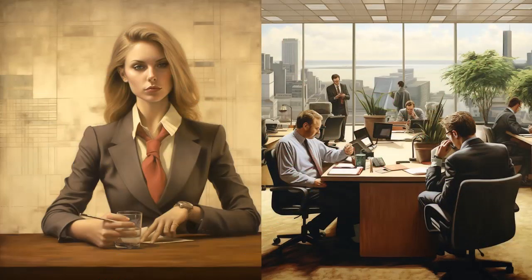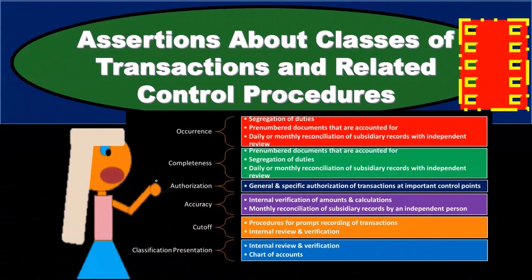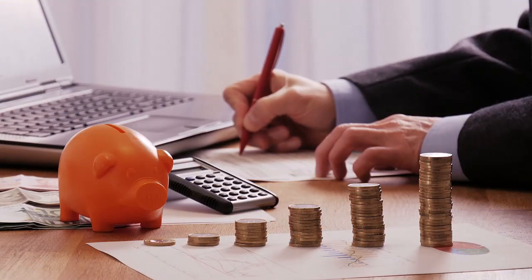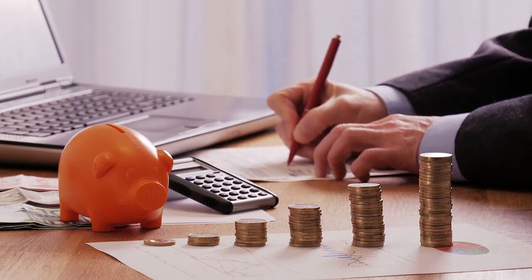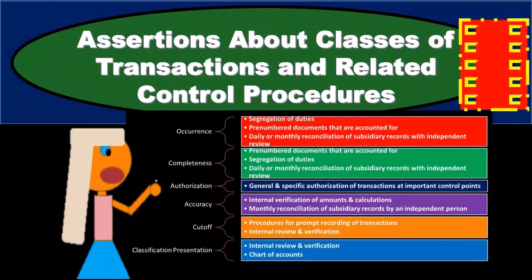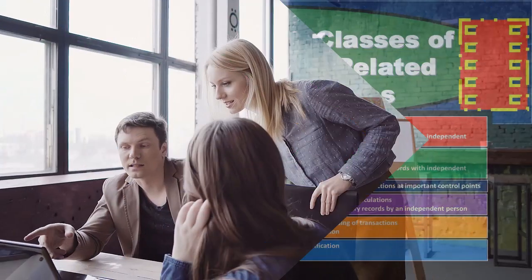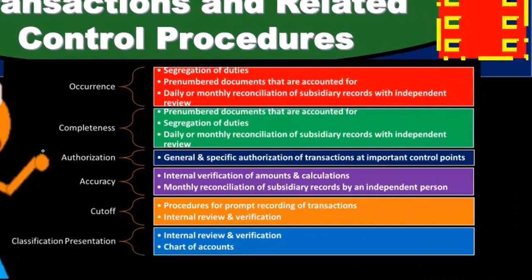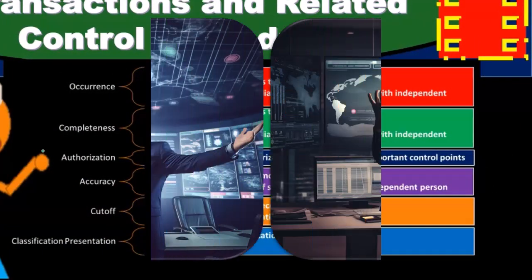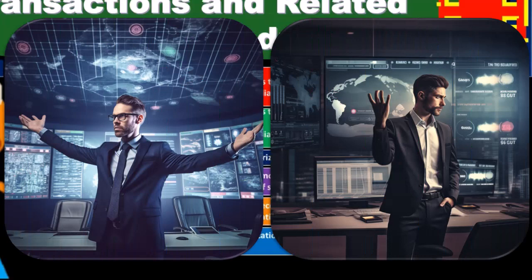We need to first think about what the assertions are, and then think about the types of controls that would be put in place in order to achieve those objectives. Some of them will be universal — everybody has a bank account, everybody should be reconciling their bank account. But you should still know the assertions related to it, because we want to know the whys. That'll help us customize the internal controls to the specific risks for a particular organization.